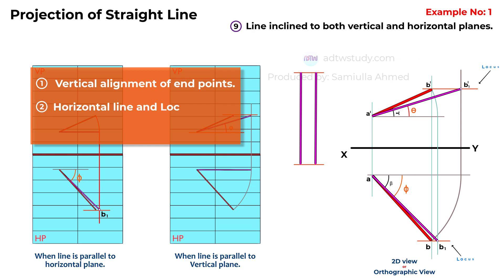Horizontal line and locus. The endpoints of the actual line and the imaginary tilted line lie on the same horizontal line. This horizontal line acts as the locus for points B dash and B for the line.